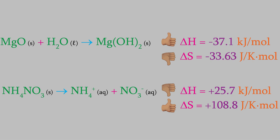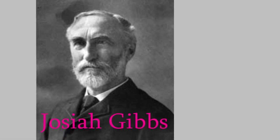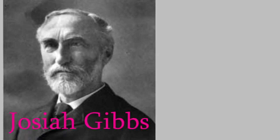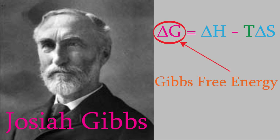That was a question that many chemists and physicists tried to answer during the 19th century. And, the person who solved it was Josiah Gibbs in 1873. He realized that the enthalpy and entropy both contribute to the spontaneity of a chemical reaction, according to this equation. Delta G is a property we now call the Gibbs free energy. Delta H and delta S are the enthalpy and entropy. And, T is the temperature in kelvin.